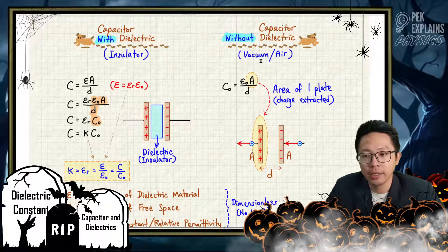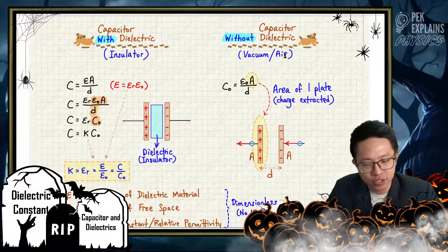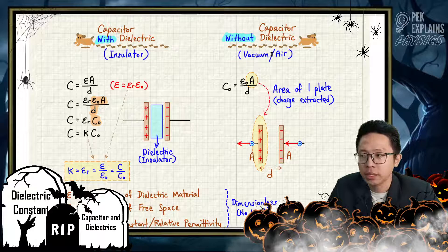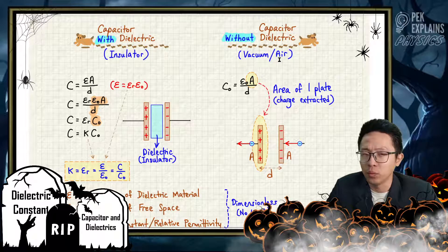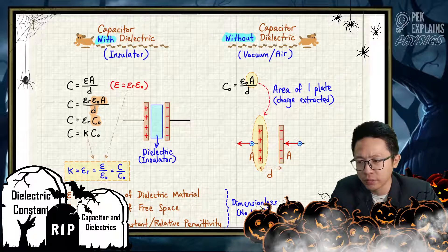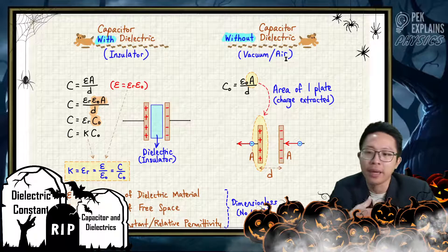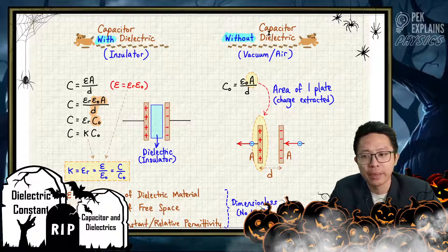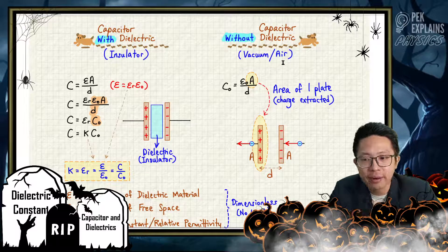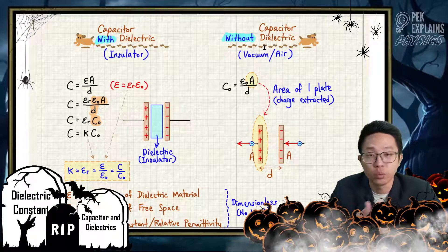Normally, if without dielectric, we say the space between the two plates is filled with vacuum, or just air. Actually air is also an insulator, so air is known as a dielectric also. But normally in questions, if it simply says the capacitor is with air only without giving any dielectric constant value like εᵣ, we just assume that air is like vacuum. So we just assume it is a capacitor without dielectric. Normally vacuum and air are considered without dielectric.